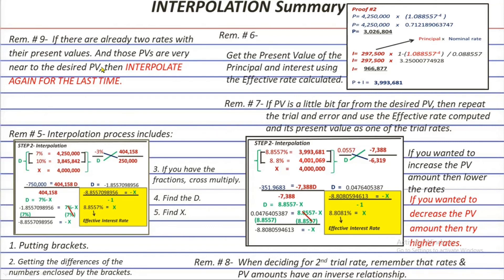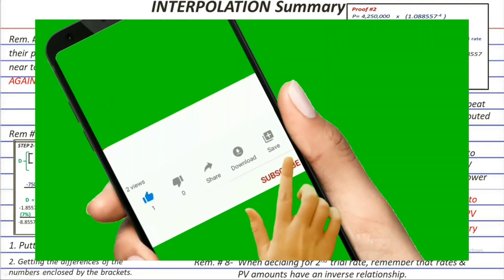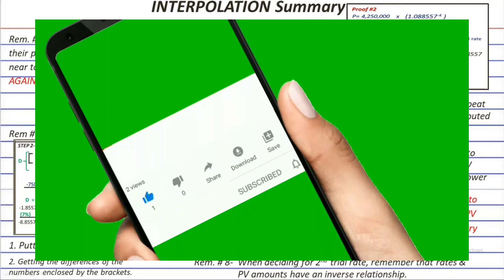This is the last episode for interpolation in the present value series. There is also another method of interpolation discussed in my past videos on time value of money — you can find it in my channel's playlist under time value of money or mathematics of investment. In the next episode, we will get the effective interest rate for debts or receivables with one year maturity term only. If you learned something, please click like, subscribe, and hit the notification bell selecting all to be updated. Thank you for watching and see you in the next one.